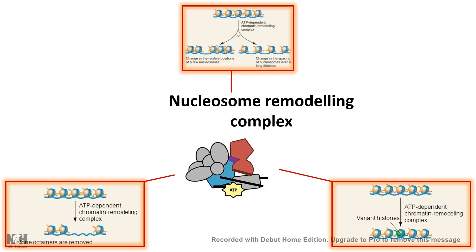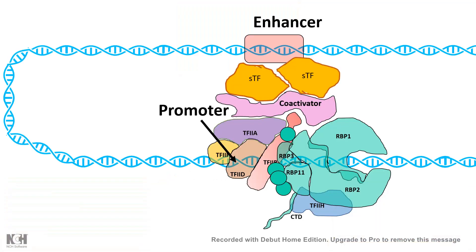Nucleosome remodeling complexes can also change the spacing between nucleosomes or replace a histone with a specific histone variant. Active chromatin has signature histone variants associated with a transcriptionally active state. We should think about a gene in a holistic chromatin landscape manner, not as an isolated part of DNA. There are also cis-regulatory DNA elements — such as enhancer sequences where specific transcription factors bind — that, in coordination with coactivators or corepressors, regulate how transcription happens from the promoter region.